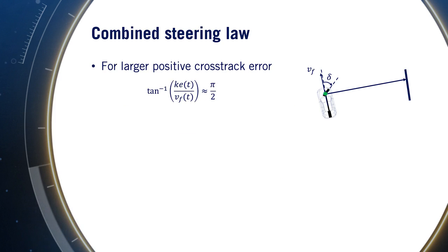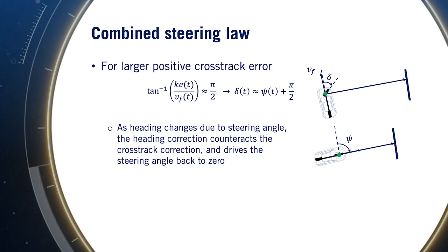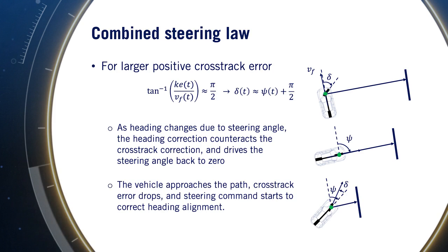For large positive cross-track error, ke over vf becomes large, and the inverse tangent approaches pi over 2. So we can approximate the Stanley control law as the heading error plus pi over 2. This large value clamps the steering command to the maximum, and the vehicle turns towards the path. The effect of this turn is to increase the heading error in the opposite direction, and so the steering command will drop to zero once the heading error reaches minus pi over 2. The vehicle then proceeds straight to the path until the cross-track error decreases. At this point, the heading term starts correcting the alignment with the path again, and ultimately, the vehicle starts to track the path more closely.